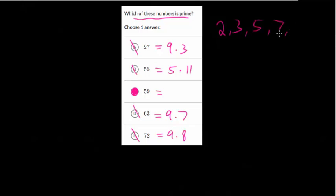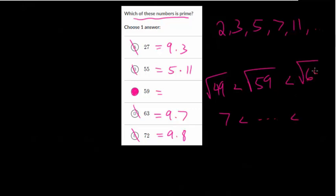But let's actually make sense of it and we have to check all the prime numbers that are less than it, but only up to the square root of this number. So the square root of 59 is sandwiched between the square root of 49 which is 7 and the square root of 64 which is 8.